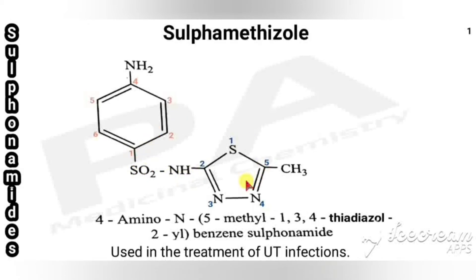The heterocyclic ring present in sulfamethizole is called 1,3,4-thiadiazole. This drug is used in the treatment of urinary tract infections.